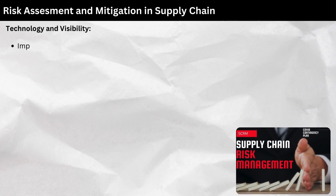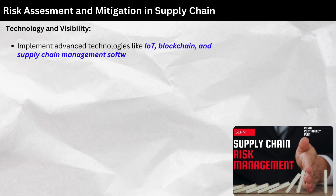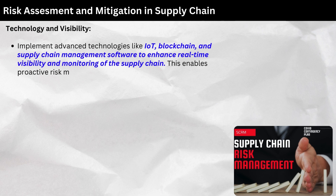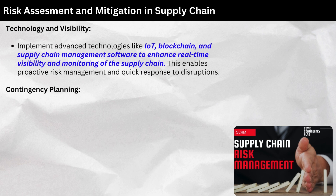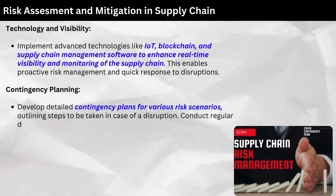Technology and visibility: Implement advanced technologies like IoT, blockchain, and supply chain management software to enhance real-time visibility and monitoring of the supply chain. This enables proactive risk management and quick response to disruptions. Contingency planning: Develop detailed contingency plans for various risk scenarios, outlining steps to be taken in case of a disruption. Conduct regular drills and simulations to ensure preparedness.